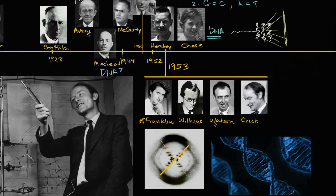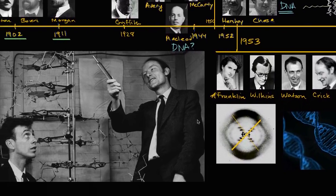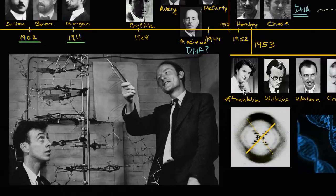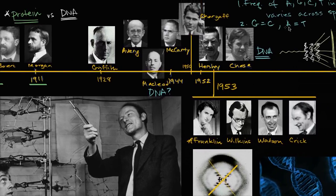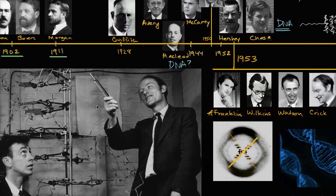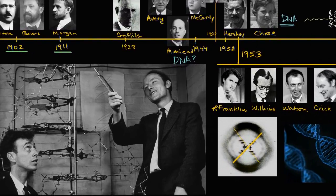At the same time, Watson and Crick were trying to solve the structure, and they got hold of Franklin's work with the help of Maurice Wilkins, who Franklin worked with. They were able to establish that it wasn't a single helix but a double helix, with base pairs forming the rungs — and that was really interesting because it showed how DNA could replicate itself and contain actual information. We go into much more depth in future videos.